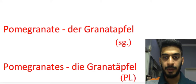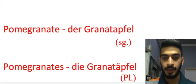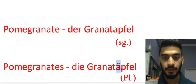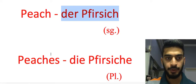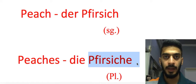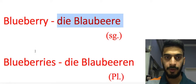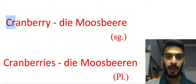Pomegranate — 'der Granatapfel' singular form, pomegranates — 'die Granatäpfel' plural form. As we can see there is a slight change in plural form — 'a' is with umlaut. Peach — 'der Pfirsich', peaches — 'die Pfirsiche' — we have extra 'e' at the last position. Blueberry — 'die Blaubeere' singular form, blueberries — 'die Blaubeeren' plural form.